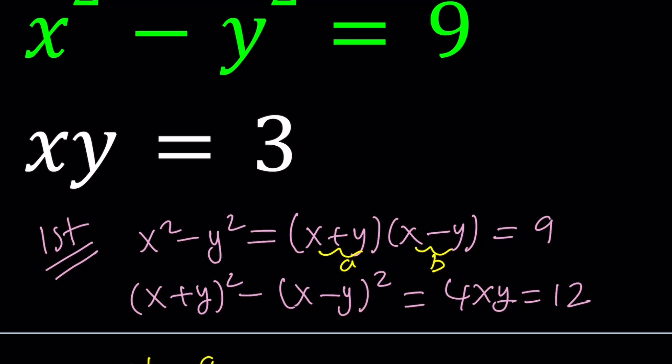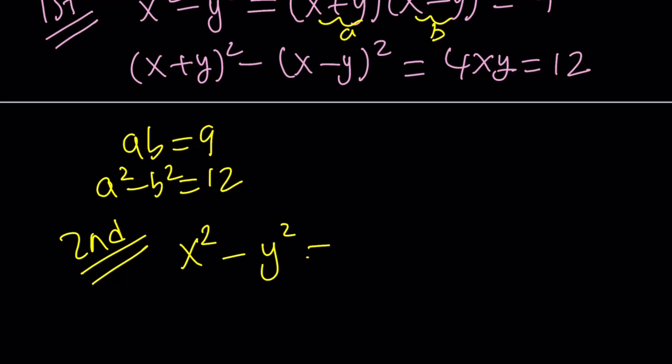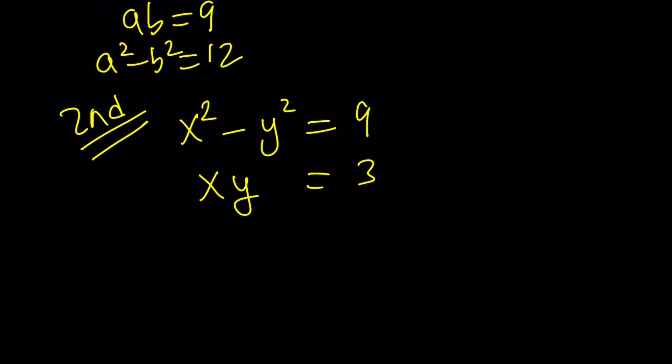Do you think there's another way to do this? Let me go ahead and show you the second method and then you'll let me know. So, the second method is the one that worked well. Again, the equations are x squared minus y squared equals 9 and xy equals 3.